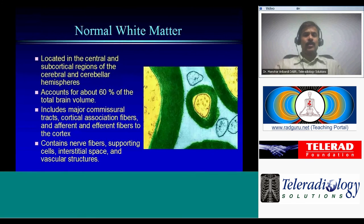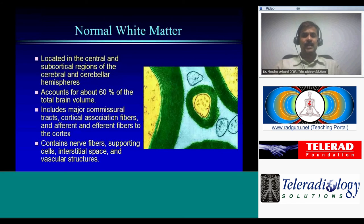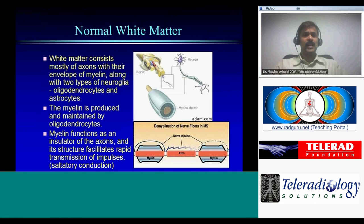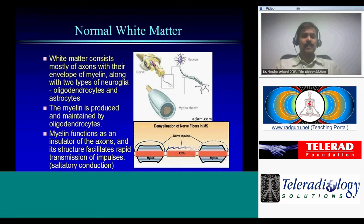Normal white matter is located in the central and subcortical regions of the cerebral and cerebellar hemispheres, accounting for about 60% of total brain volume. It includes major commissural tracts, cortical association fibers, and afferent and efferent fibers to the cortex. It consists mostly of axons with their envelope of myelin, along with oligodendrocytes and astrocytes. Myelin, produced by oligodendrocytes, insulates axons and facilitates rapid impulse transmission — when disrupted, transmission is hindered.